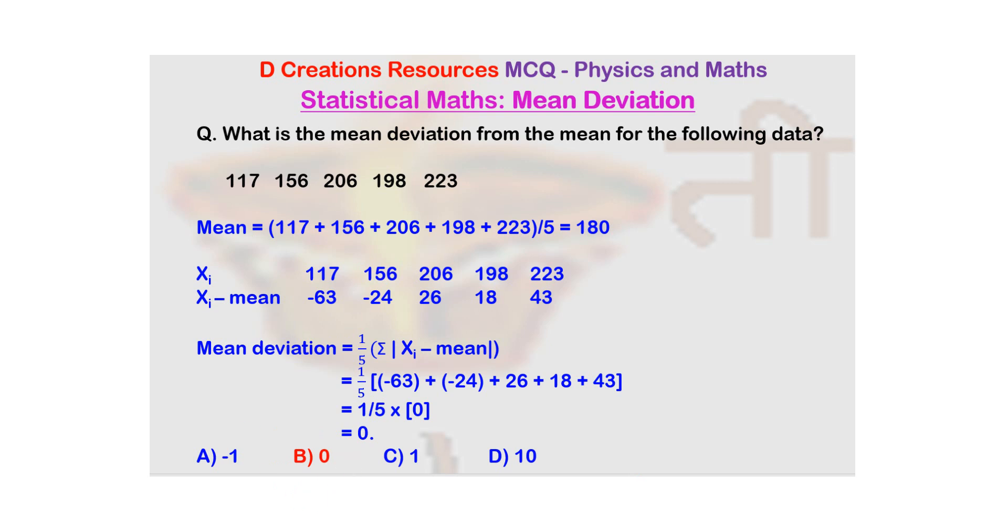You can do it and remember that when you add them up and if it comes out to be a negative number, you need to ignore the minus sign. Whatever positive number you get, divide it by the number of data points. In this case it was simple, it was 0 itself, so there was no reason to ignore any sign. But if it has a negative sign, you will have to ignore it.